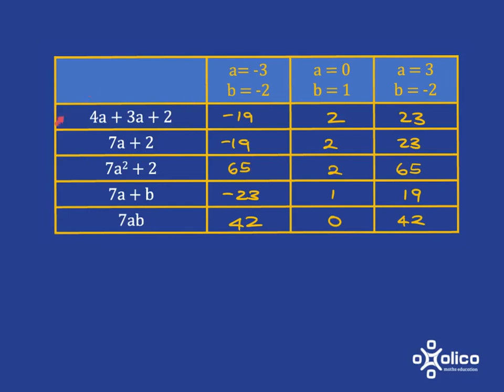Now, one question I want to ask myself is, which of these are equivalent expressions? And now, hopefully, you see that 4a plus 3a plus 2 can be simplified, because 4a plus 3a, these are like terms, and so you'll get 7a. So 4a plus 3a plus 2 is equal to 7a plus 2. These two are equivalent expressions. And you'll notice that because they're equivalent expressions, they have exactly the same values for any different value of a you choose to put in.